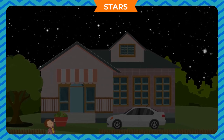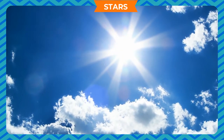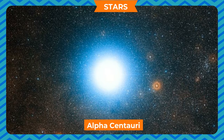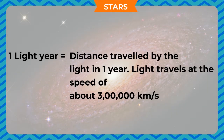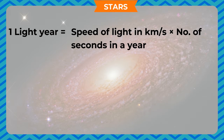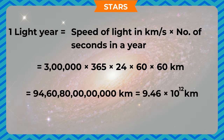Stars are not permanent; however, they live for millions of years. The Sun is also a star but appears bigger and brighter because it is much nearer to us than any other star. The next nearest star is Alpha Centauri, which is about 4.3 light years away from the Earth. Light year is the unit used to measure celestial distances in the Universe. One light year is equal to the distance travelled by light in one year. Light travels at the speed of about 3 lakh kilometres per second. One light year equals 3 lakh × 365 × 24 × 60 × 60 kilometres, that is equal to 9,460 billion kilometres, or 9.46 × 10¹² kilometres.